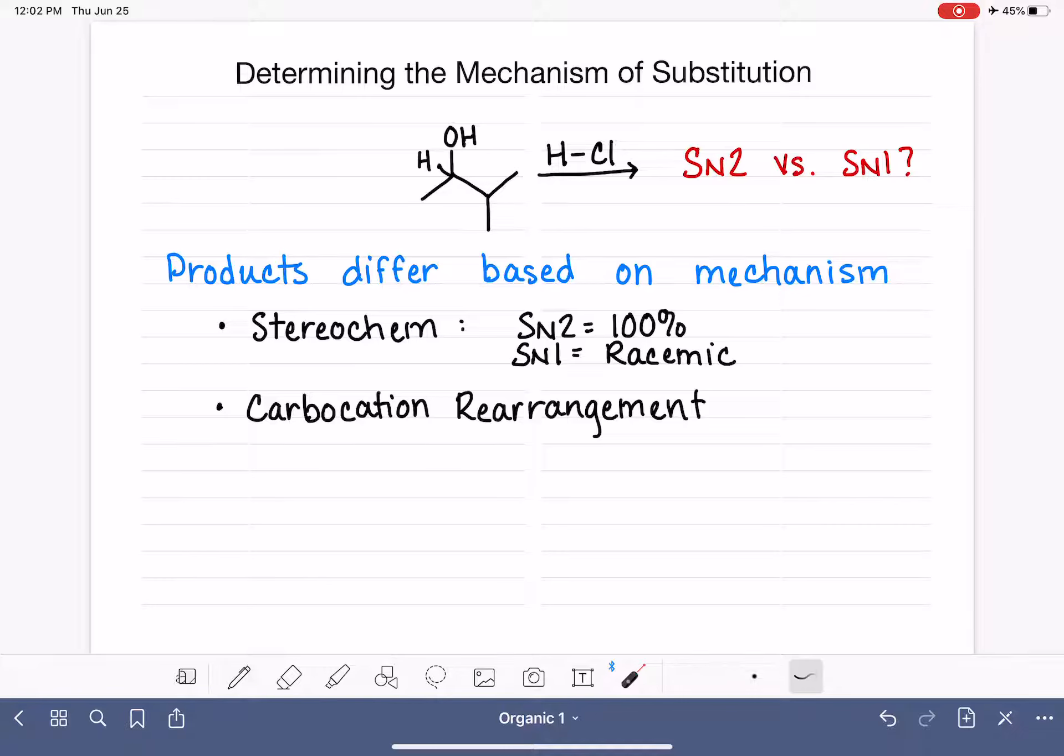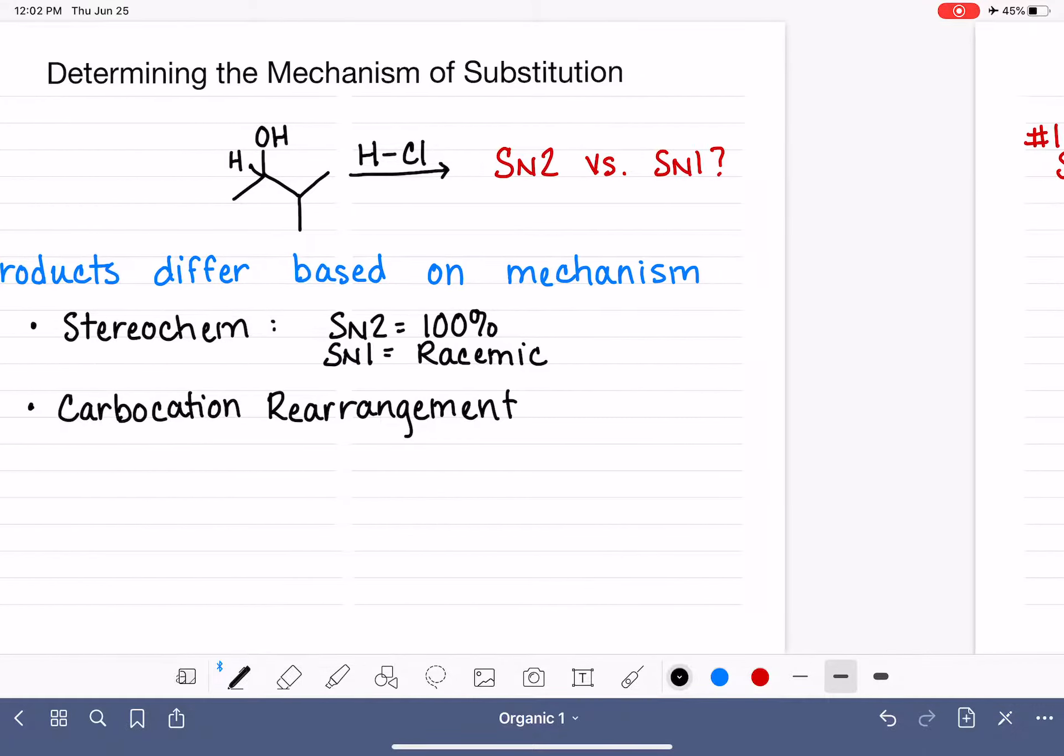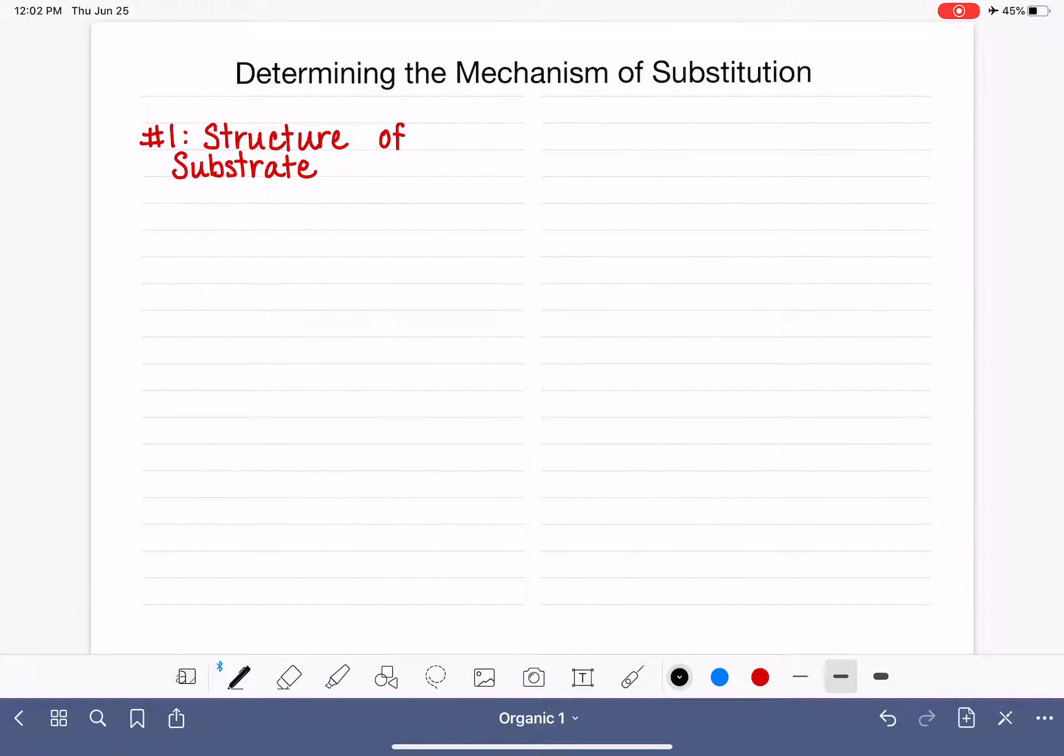So it's really important that you know when you're looking at a reaction like this, you know whether you should draw the SN2 or the SN1. There are four different variables that we can consider when we're trying to choose SN2 or the SN1 mechanism. And I'm going to take you through all four of these variables in order of importance, and I'm going to do each one of them in a separate video.